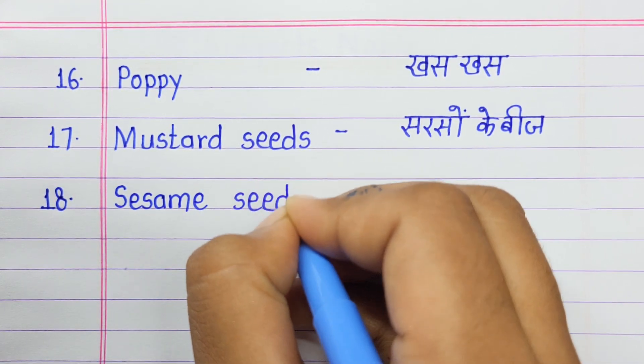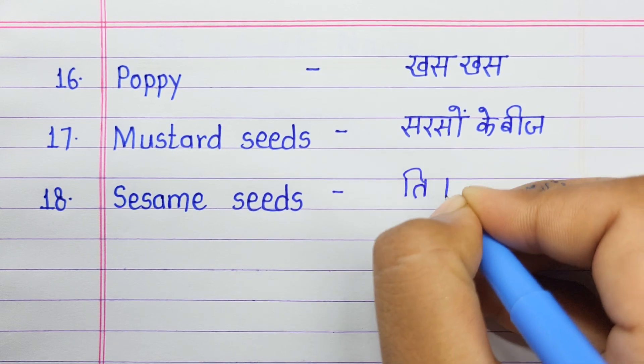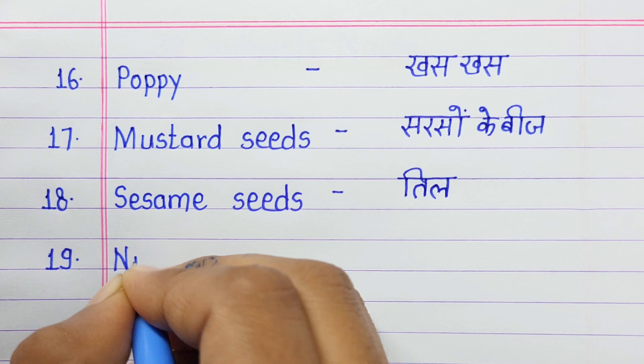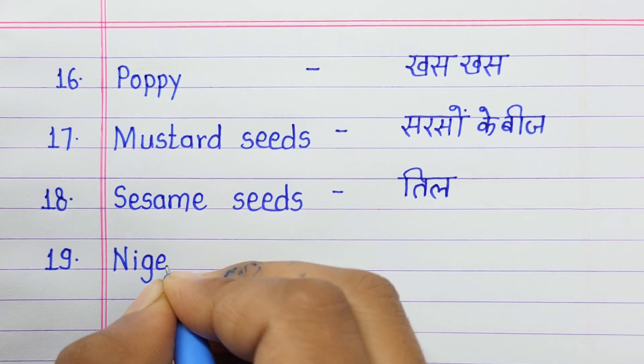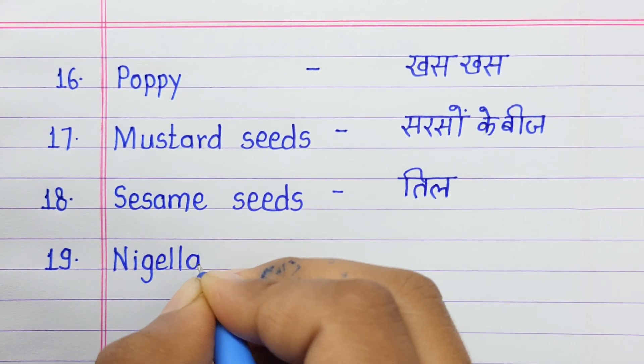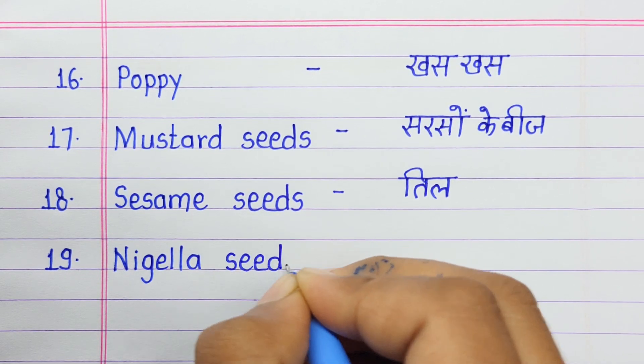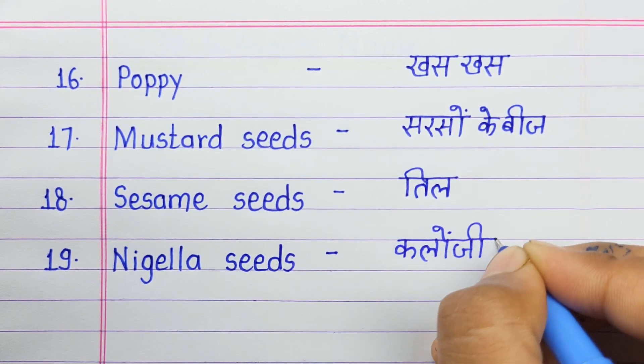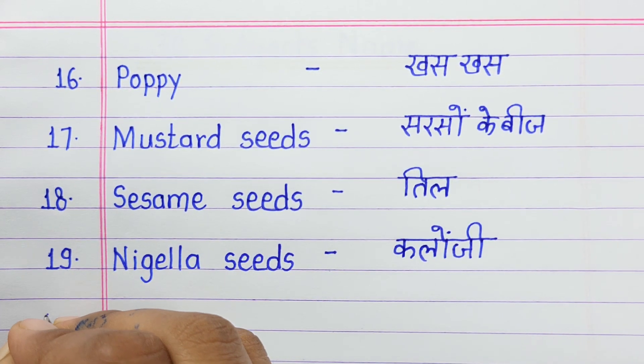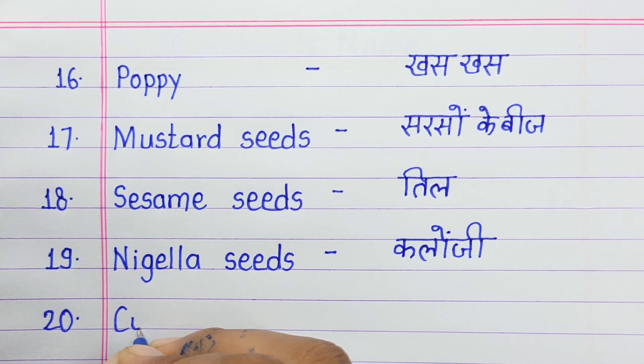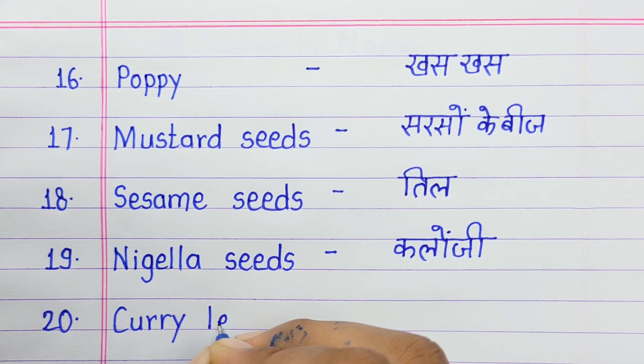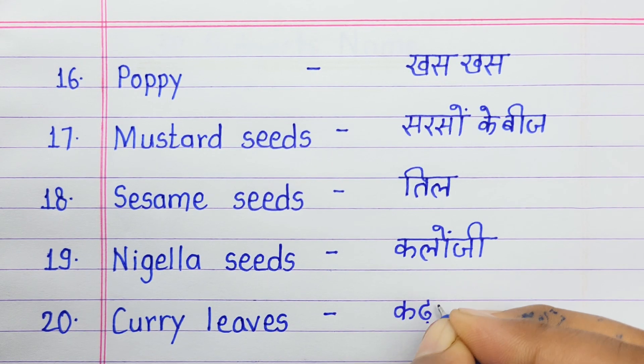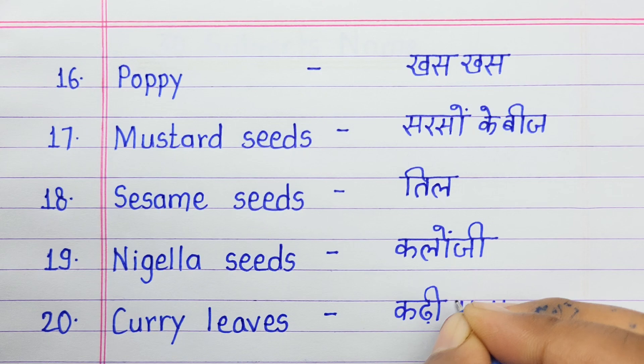Number eighteen: Sesame seeds means till. Number nineteen: Nigella seeds means kalonji. Number twenty: Curry leaves means kari patta.